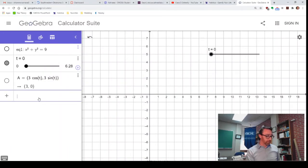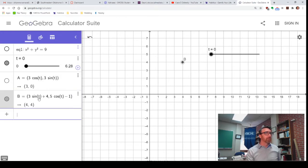We'll put those in. My point B. So I had 3 sine t plus 4. That was my x-coordinate. And my y-coordinate was 5 cosine t minus 1.